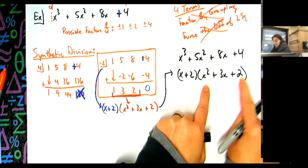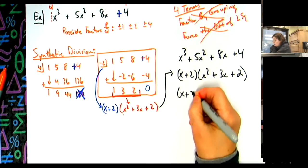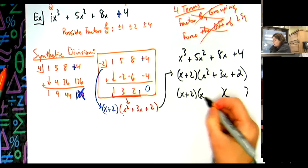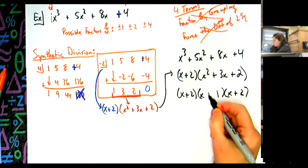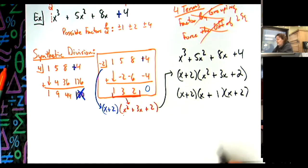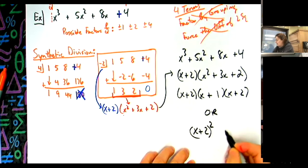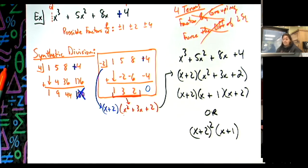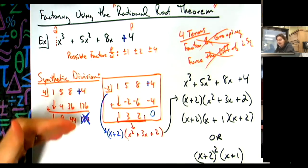Now x squared plus three x plus two is a trinomial I can factor normally. Two times one gives me two, and two plus one gives me three in the middle, so it factors to x plus two times x plus one. The complete factored form is x plus two, times x plus two, times x plus one — or written neatly, x plus two squared times x plus one. I used the rational root theorem because factoring by grouping and difference of squares didn't work.